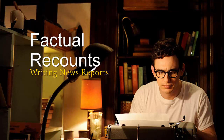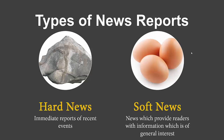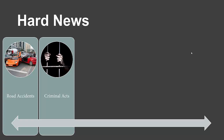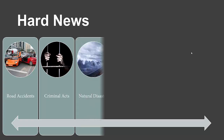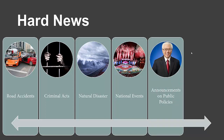This leads us to factual recount — writing news reports. There are two main types of news reports. Hard news involves reports of recent events, such as road accidents, criminal acts like robbery, kidnapping, and rape, natural disasters like tsunamis, earthquakes, and tornadoes, national events like National Day, and announcements on public policy. For example, if the president or prime minister makes an announcement, it would be published as hard news. Sports events like the soccer World Cup also fall under hard news.